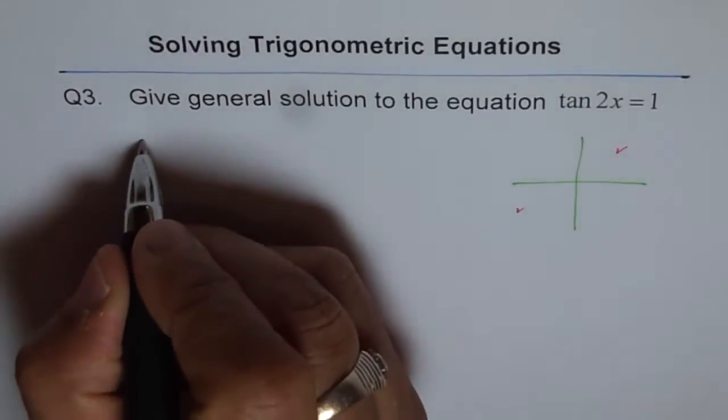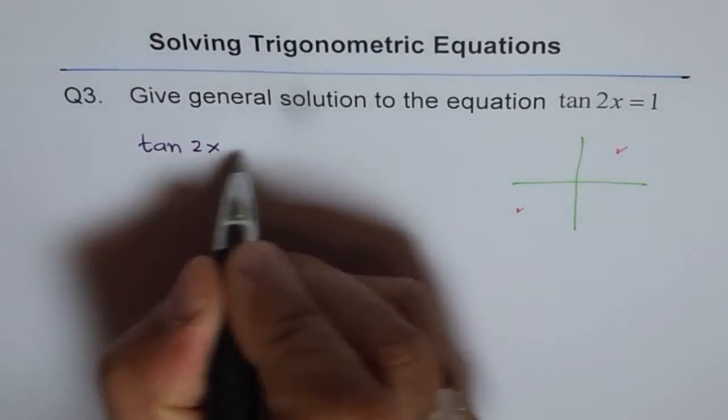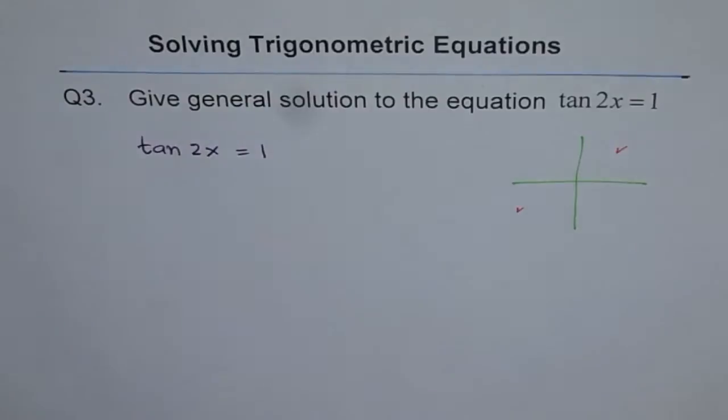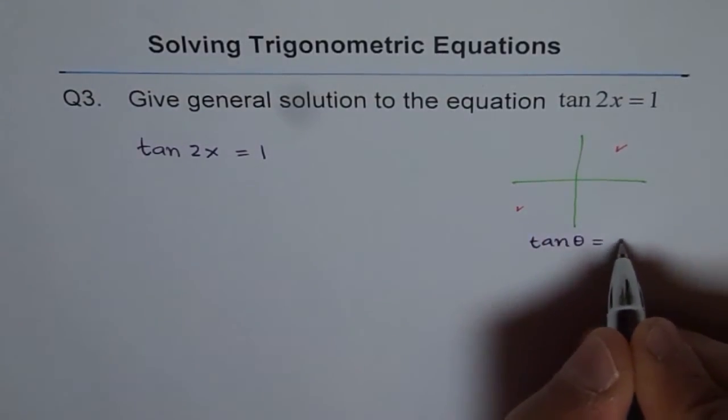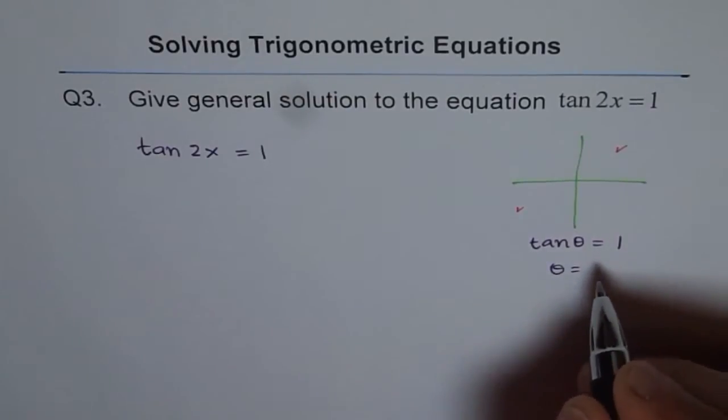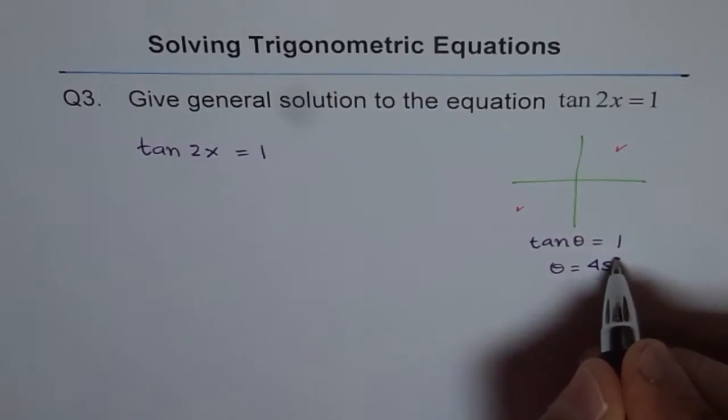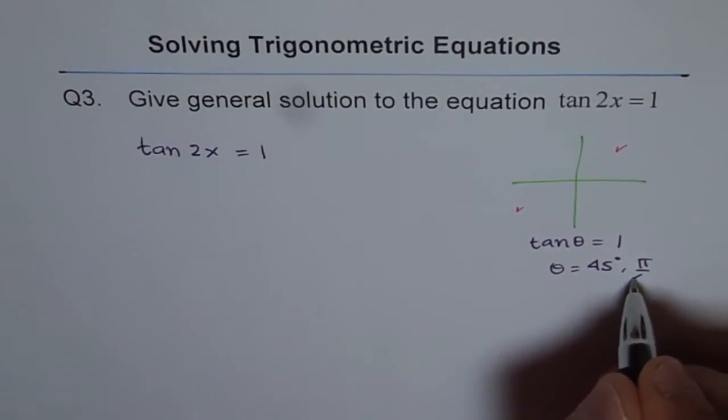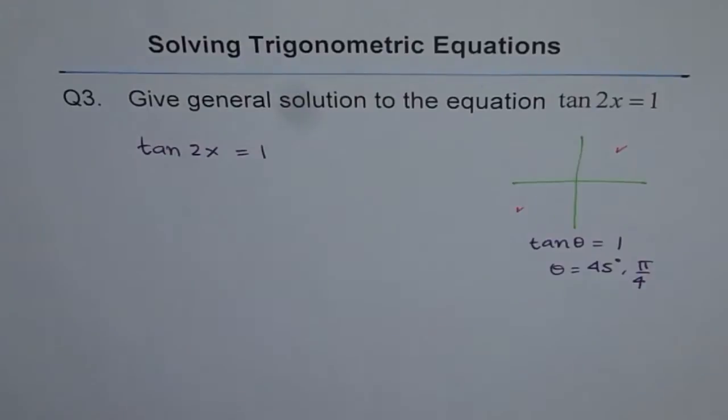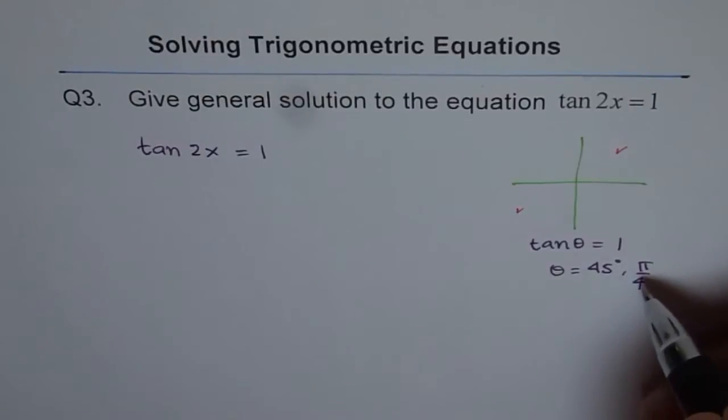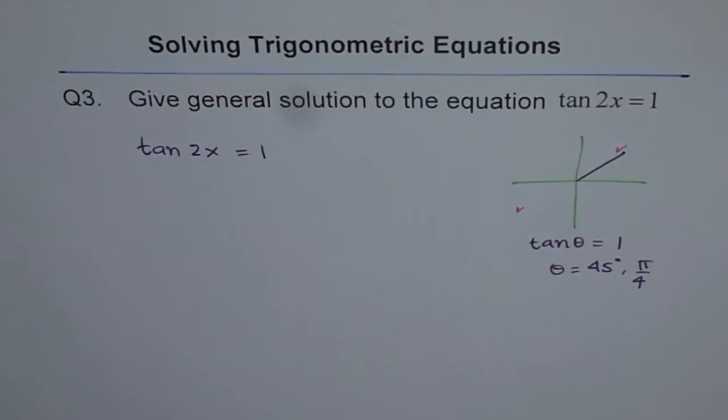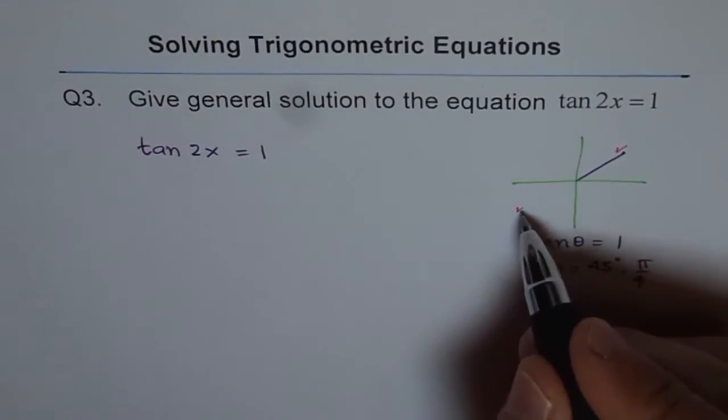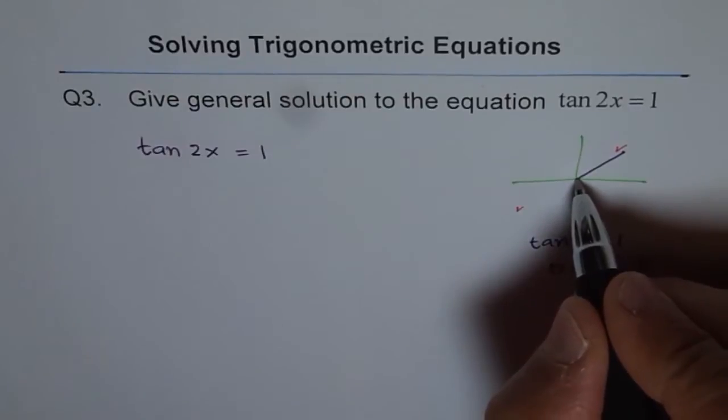So we have tan 2x equals to 1. Now, in general, we know that tan theta is equals to 1 when theta equals to, we can write 45 degrees for those who are doing in degrees and pi by 4 for those who are doing in radians. Both are the same things. So tan is 1 for 45 degrees or pi by 4 when this angle happens to be in the first quadrant. Tan is positive in quadrant 3 also. So it is 1 here also. So this is the second solution.